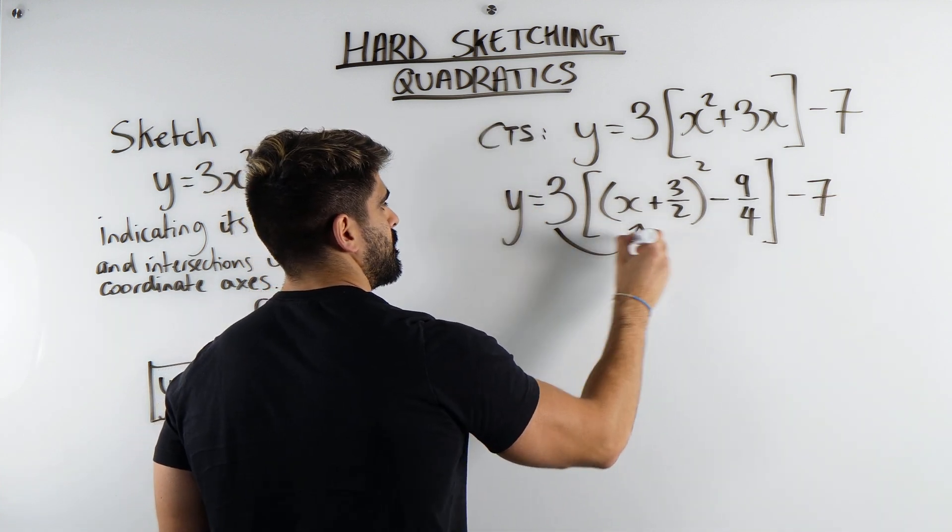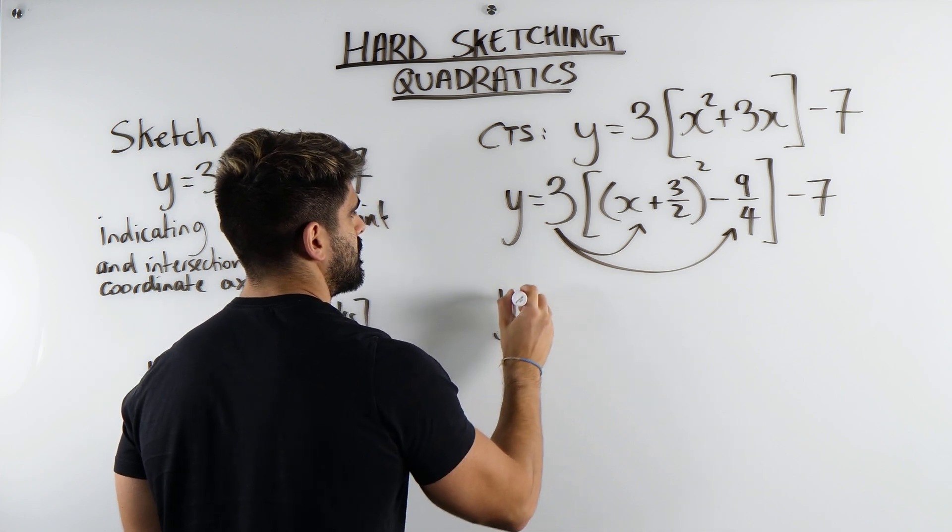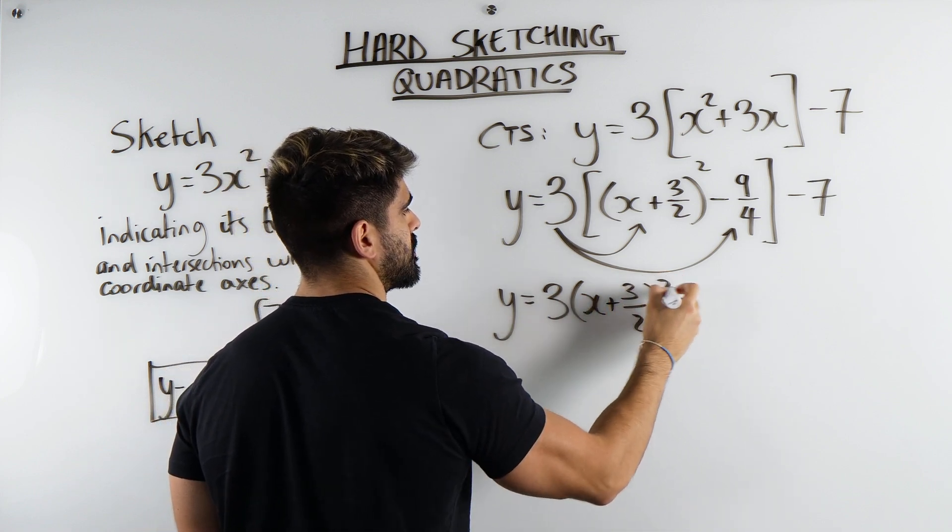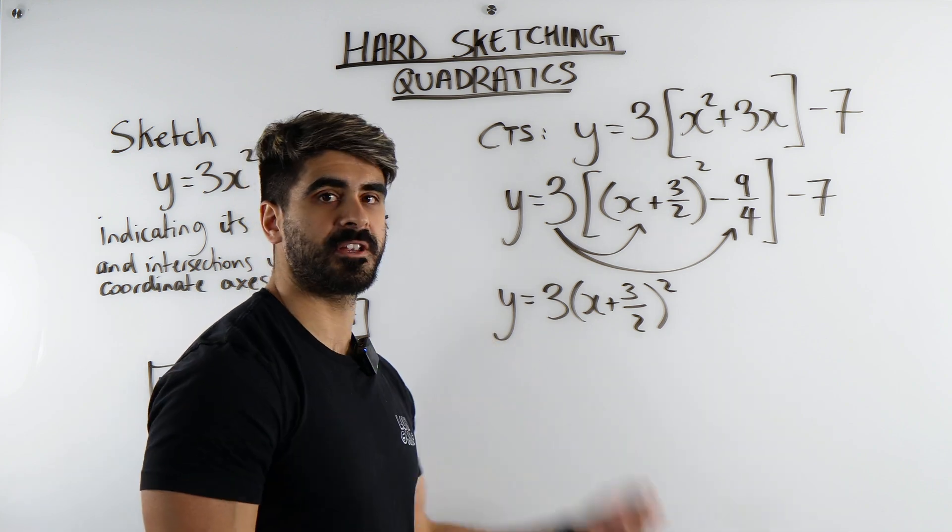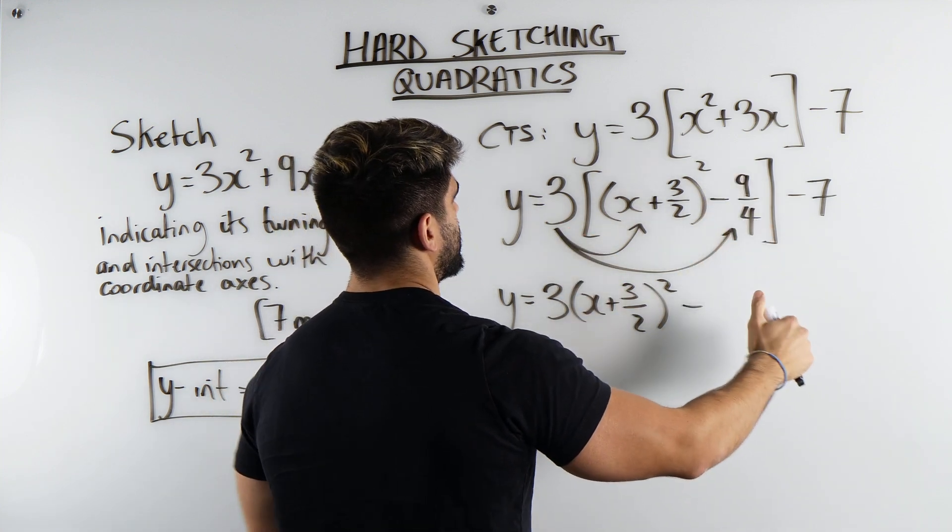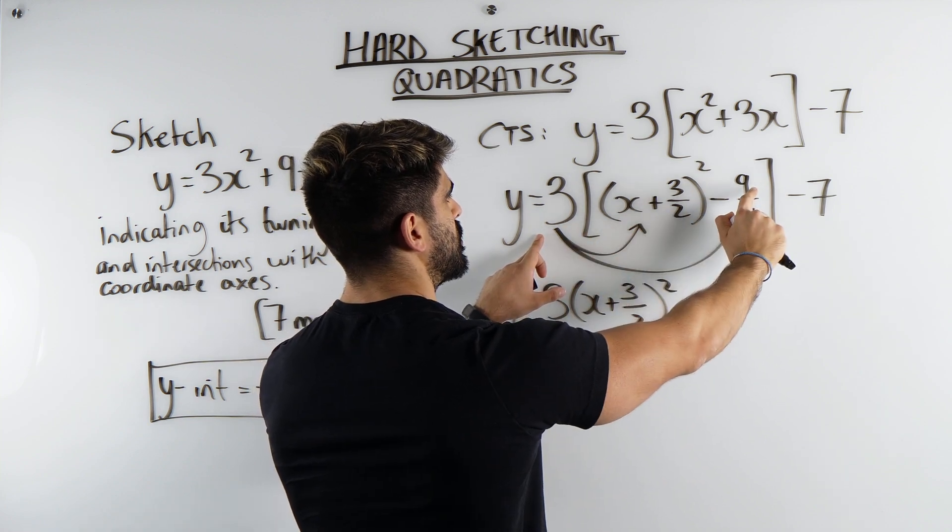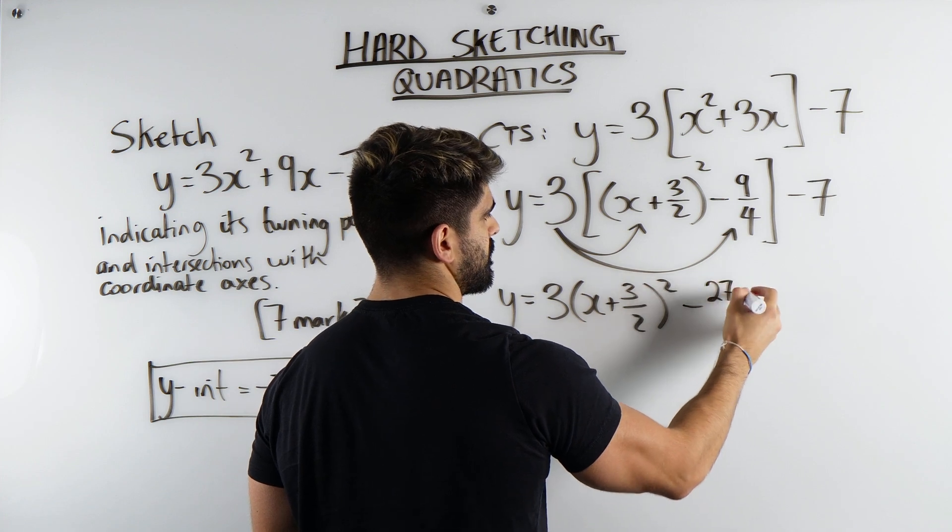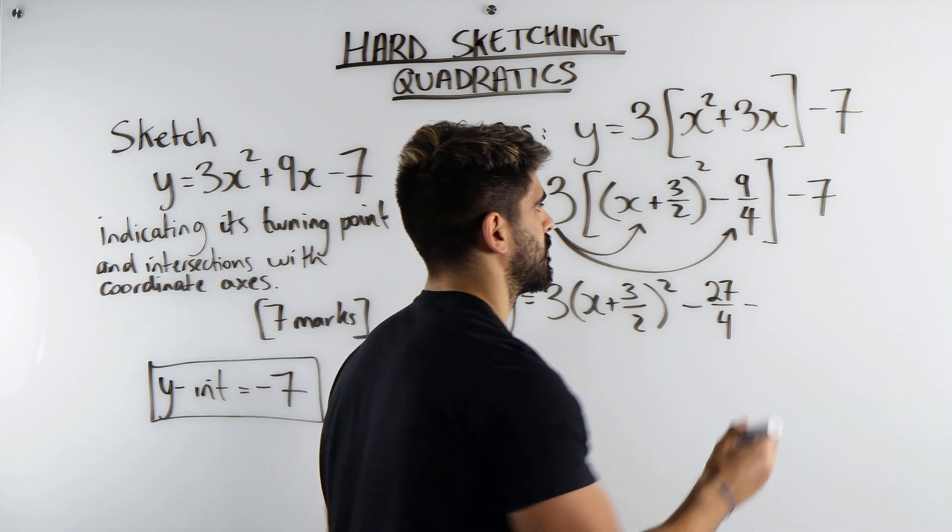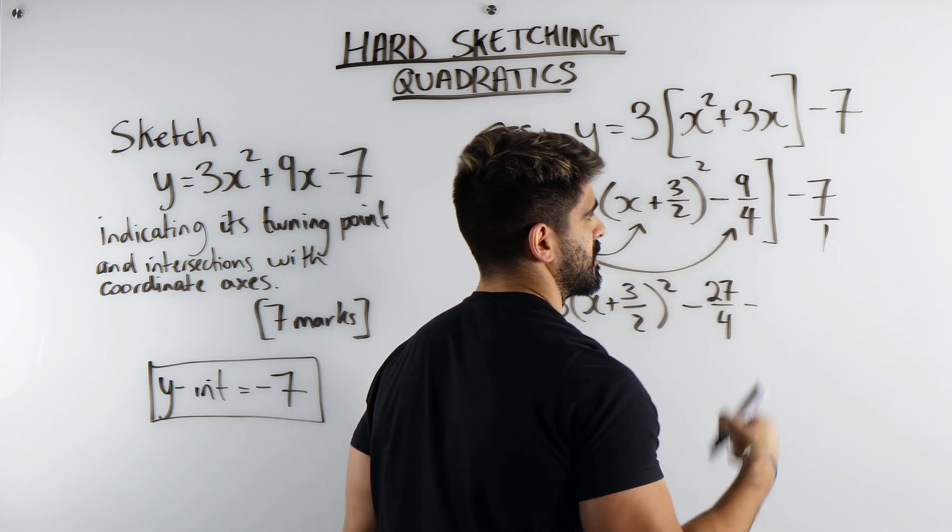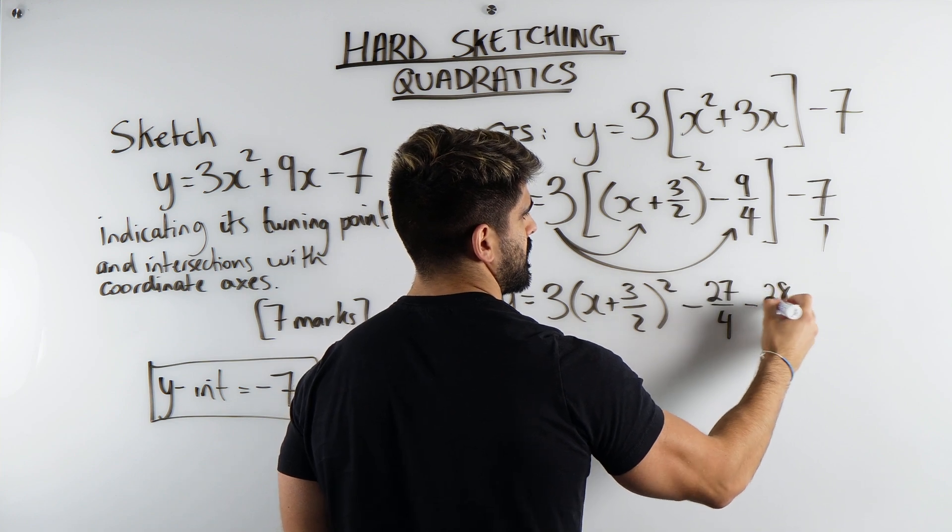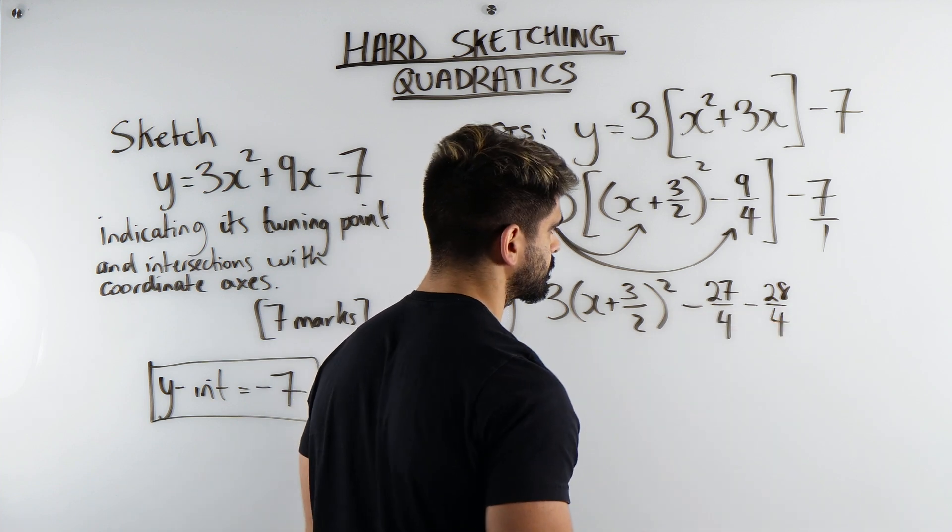Then we're just going to expand this out. So we get y is 3 lots of this bracket. Now, remember, you can't multiply the 3 into the bracket because of BIDMAS. The bracket is protecting what's on the inside. Minus 3 times this. Now, when you do 3 times a fraction, 3 multiplies with the numerator. So, minus 7. Now, we're obviously going to combine it, right? So I'm going to write this as 7/1. I'm going to times top and bottom by 4. 7 times 4 is 28 divided by 1 times 4 is 4.